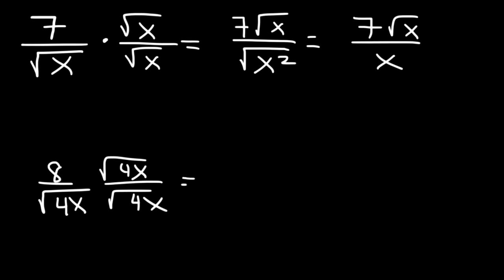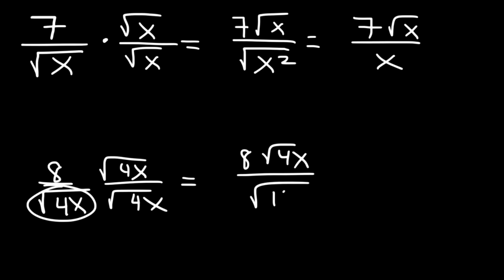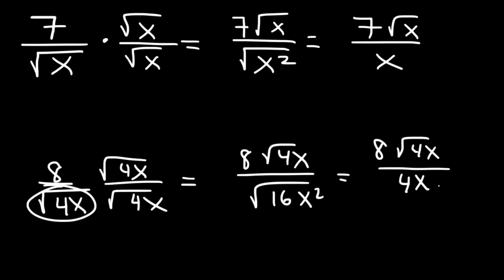For the next one, follow the same steps — multiply the top and the bottom by the radical in the denominator. That gives us 8√(4x) on top. 4x times 4x is 16x squared, and the square root of 16x squared is just 4x. Always double check to see if you can simplify further — 8 divided by 4 is 2, so the final answer is 2√(4x) divided by x.